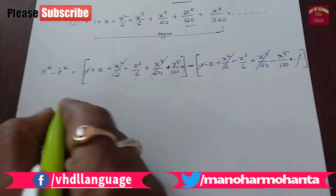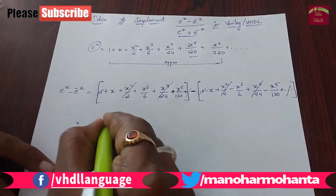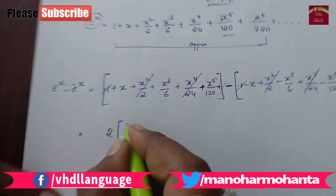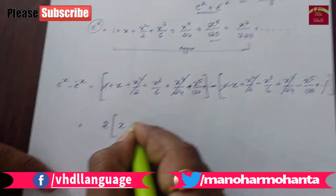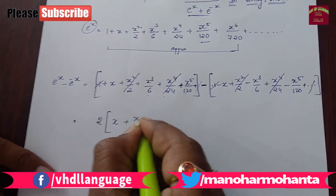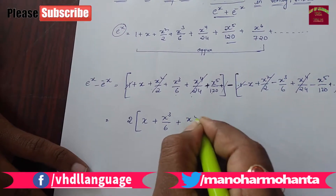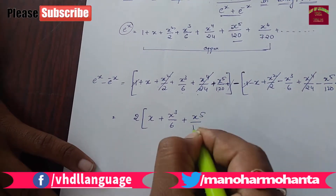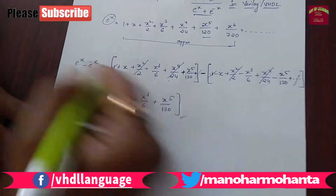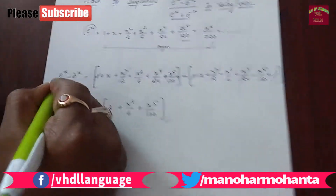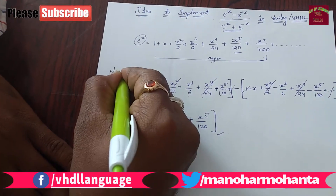So that is the reason you will be getting 2 common. Let us take 2 common: x plus x cube by 6 plus x power 5 by 120. You will be getting this as the numerator part.